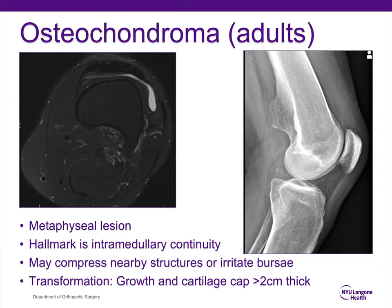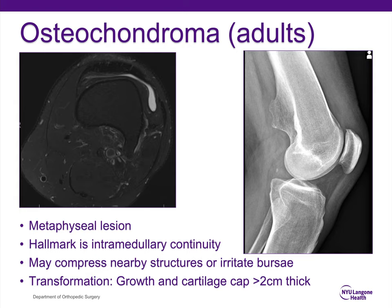Osteochondroma in adults is a benign latent lesion, whereas it tends to be active in children. These are metaphyseal, and the hallmark of these tumors is that they have continuity with the medullary canal. Depending on their location, they may compress nearby structures or irritate certain bursae. Very rarely, these can transform into malignancy — typically low-grade chondrosarcomas. A clue to know whether these have transformed in an adult patient would be growth after skeletal maturity and development of a cartilage cap that's more than two centimeters thick.